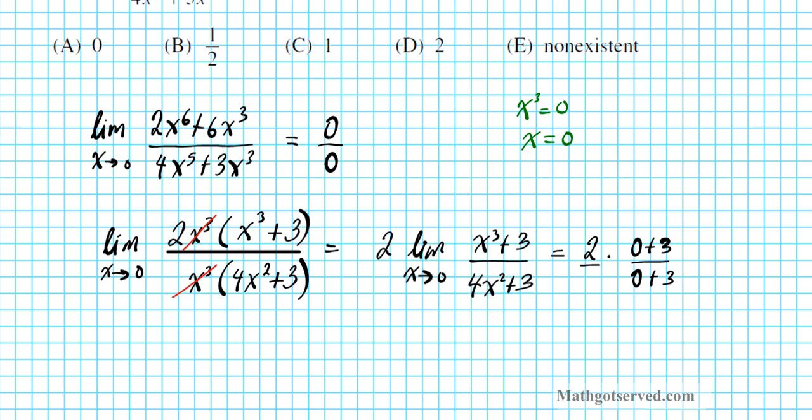And then this is over 1, and then this entire expression is just 3 over 3, so we have 2 over 1 times 3 over 3, which is just, this divides out to 1, final answer is 2.